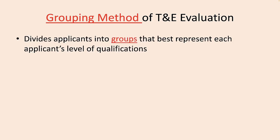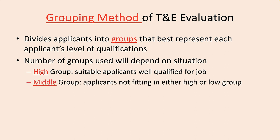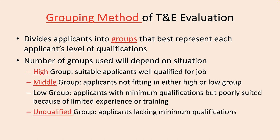The grouping method simply divides the numerous applicants into groups or categories based upon some rank ordering of their scores. You still have to score the T&E evaluation just like in the point method, but this time you put their evaluations into four or more stacks: a highly qualified stack, a middle group, a low group of applicants with limited experience or training, and an unqualified group whose scores predict they simply cannot perform the job. This is a fairly simple technique that is very intuitively understandable — professors joke that we sometimes place student essays into the A-stack, the B-stack, and the 'oh my god, what was the student thinking' stack.